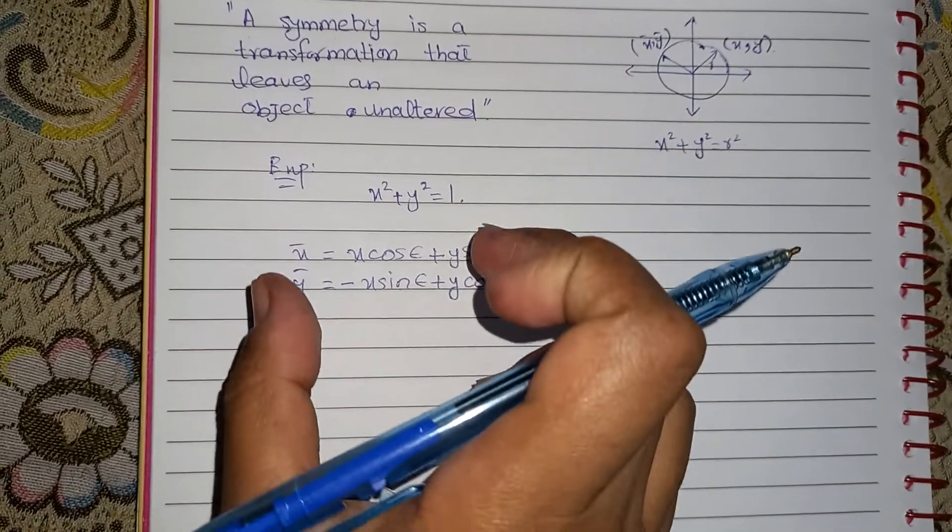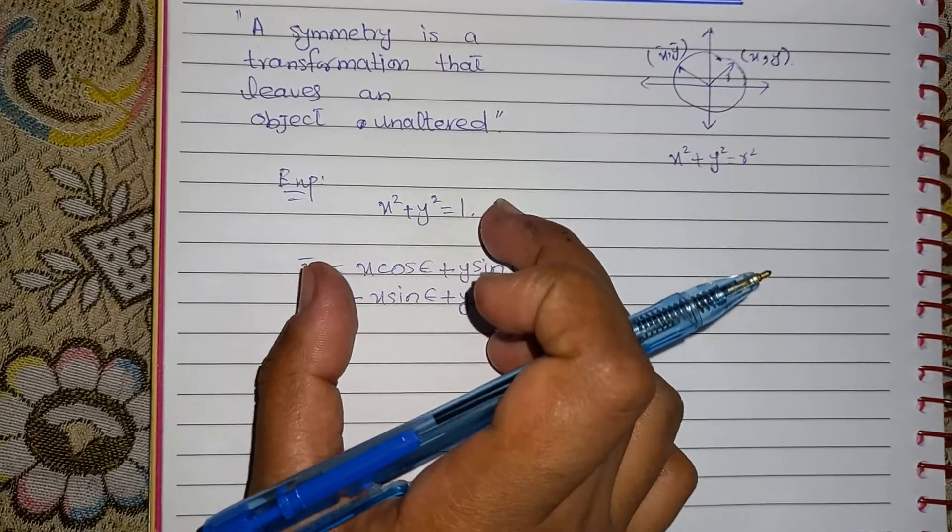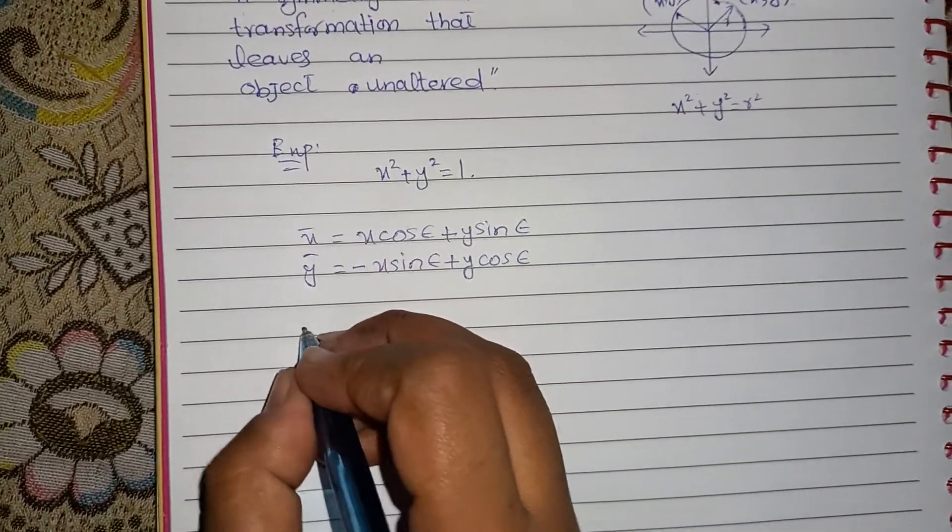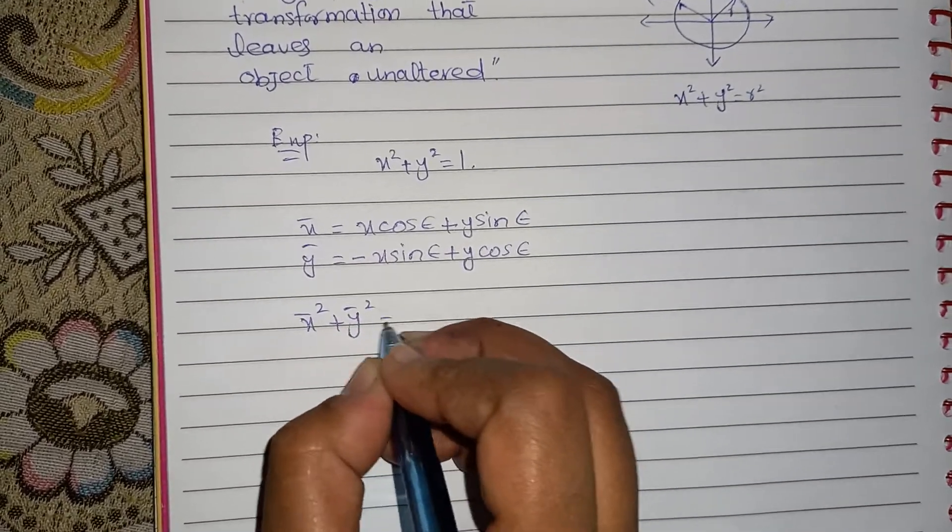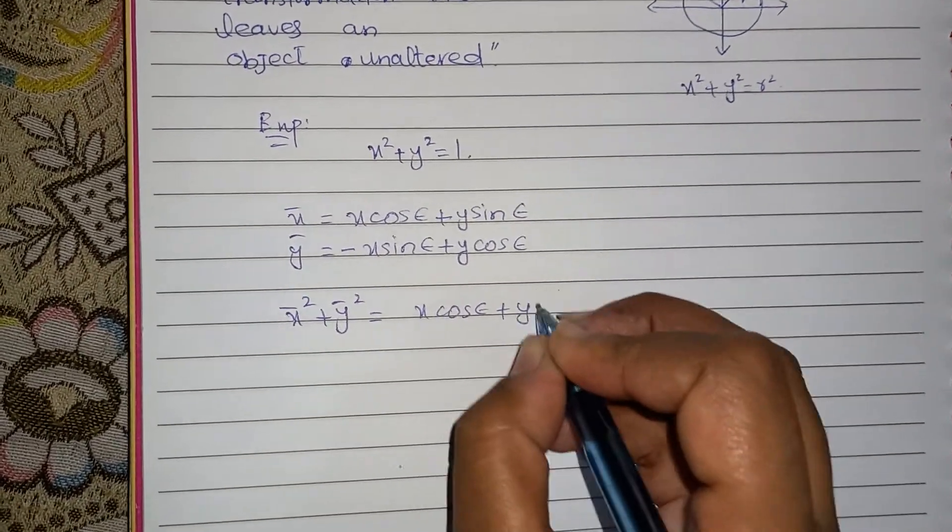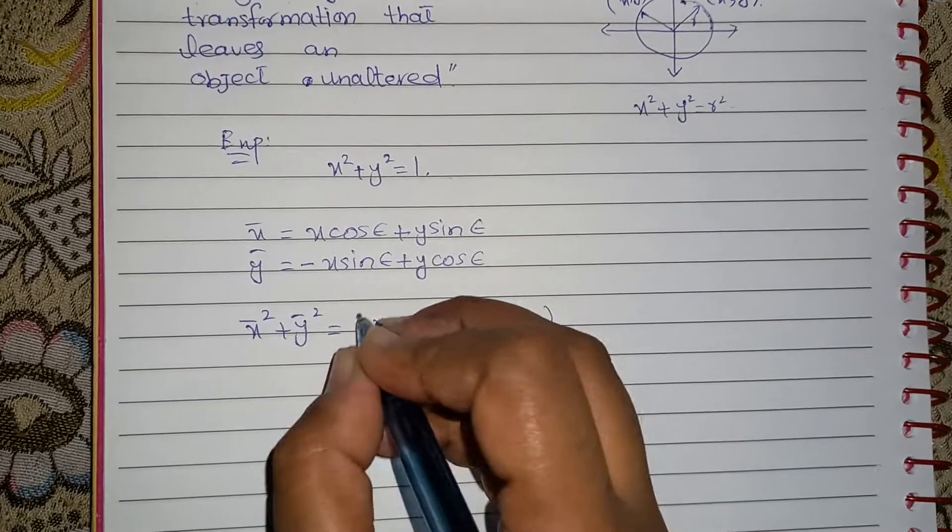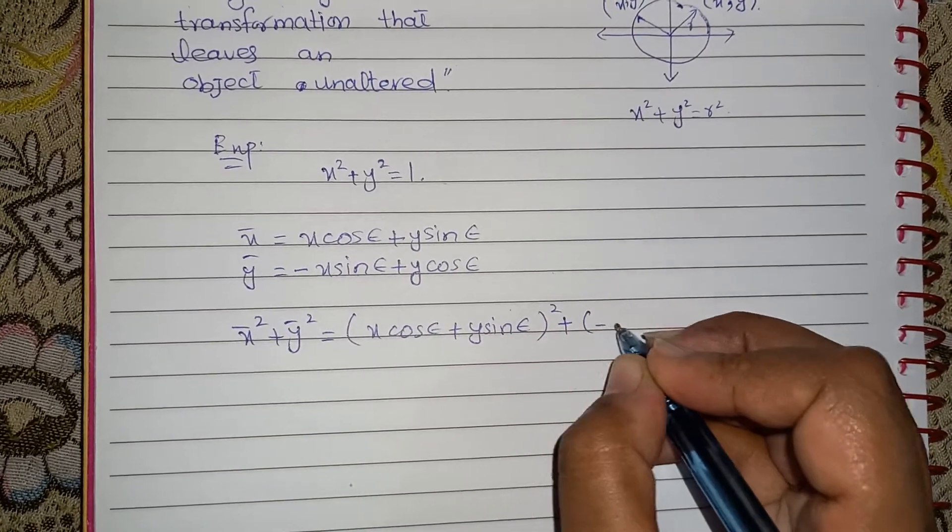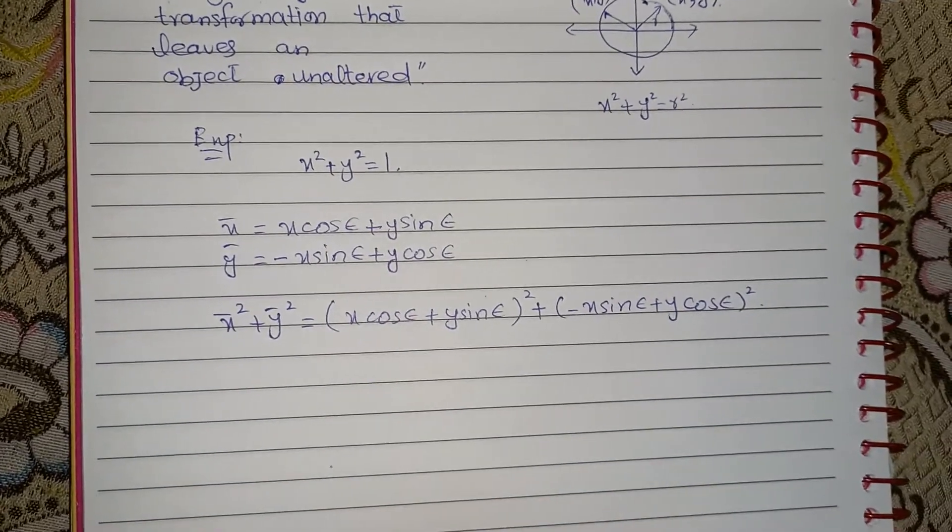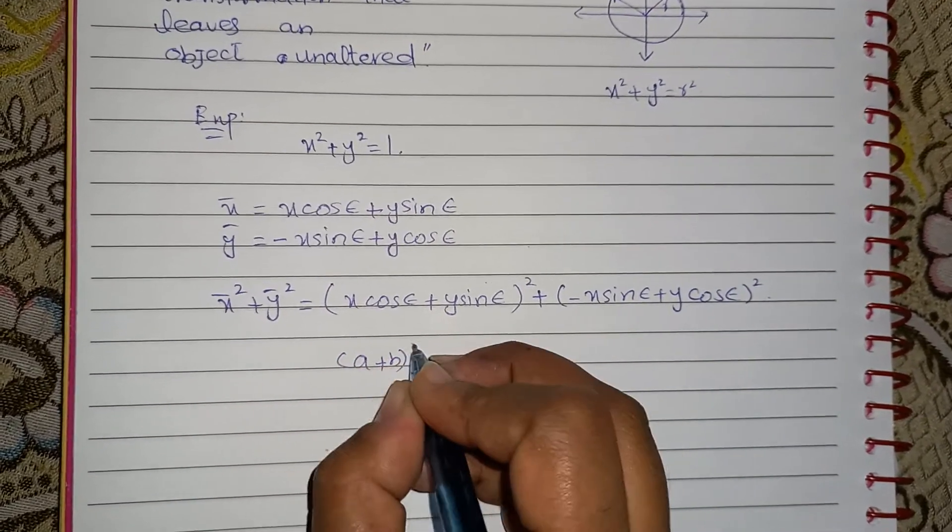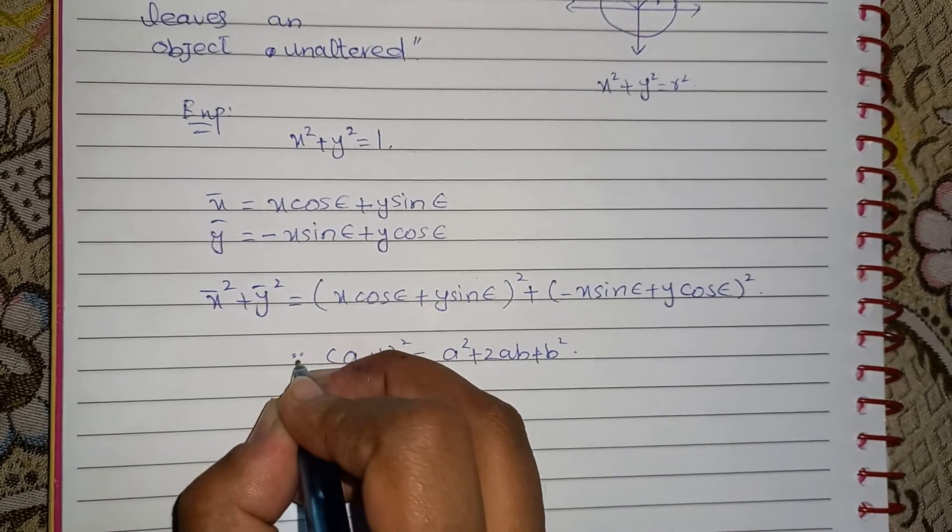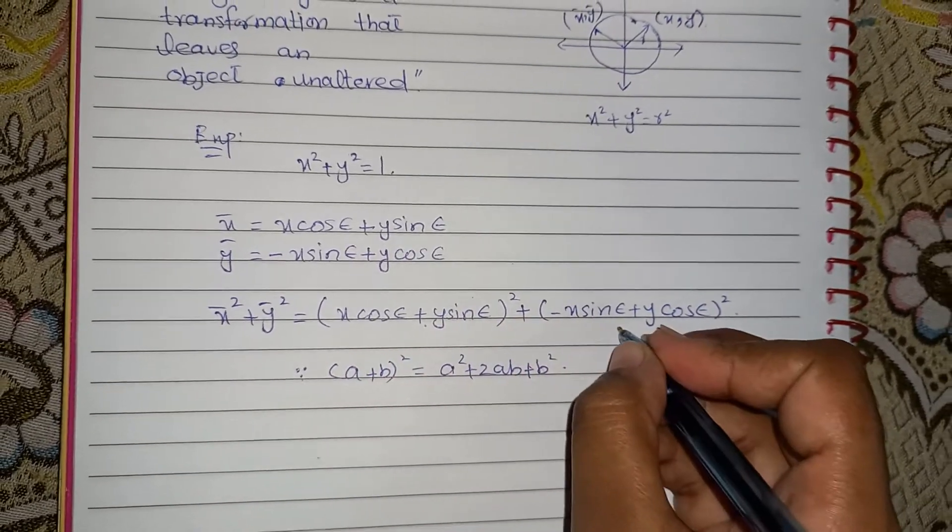Now students, if you want to find its symmetry or check whether it is symmetric with this transformation or not, then you just need to write x̄² + ȳ². And you need to substitute these two values here. Like (x cos ε + y sin ε)² + (-x sin ε + y cos ε)². Now you know that we have a formula (a + b)² = a² + 2ab + b². Now you just need to apply this formula on these terms.